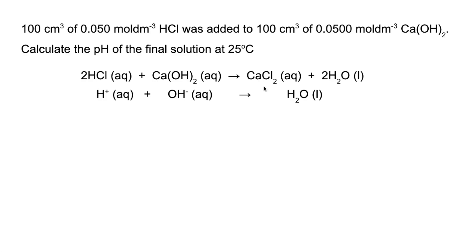Same as before, initial moles. So you can see there's some extra information. We've got 0.005 moles of HCl and that's going to give us the same number of moles of H+ ions because it's monobasic. The calcium hydroxide, however, we've got the same moles of calcium hydroxide as HCl because we've got the same concentration and volume, but this time because it's dibasic we get twice as many moles of OH- ions.